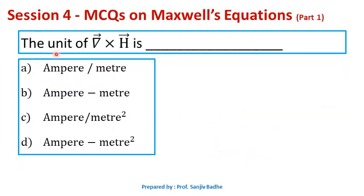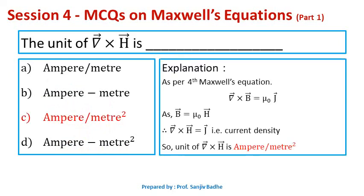Next one: the unit of curl of H bar is — ampere per meter, ampere meter, ampere per meter square, or ampere meter square? According to Maxwell's fourth equation, curl of B bar equals mu naught J bar, and since B bar equals mu naught H bar, curl of H bar equals J bar. J bar is current density, and its unit is ampere per meter square. Therefore, the unit of curl of H bar is also ampere per meter square, so option C is correct.